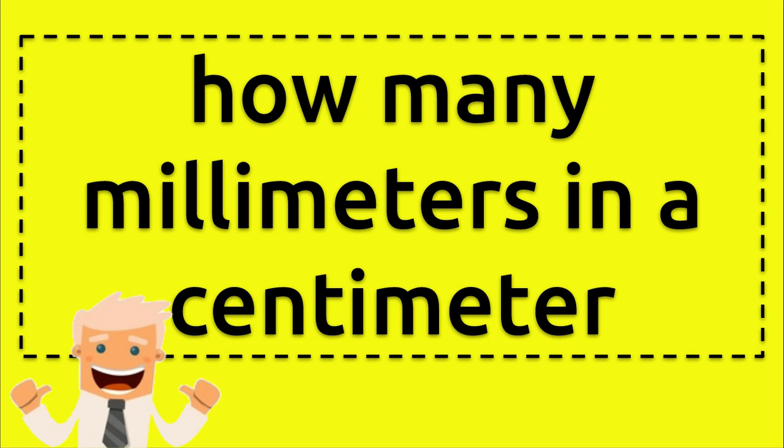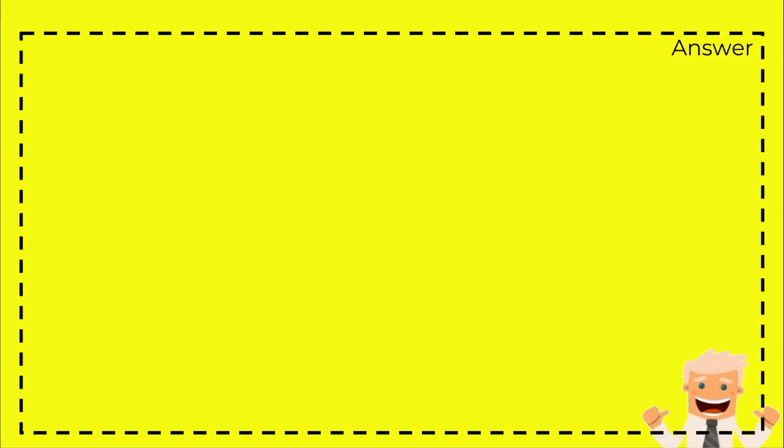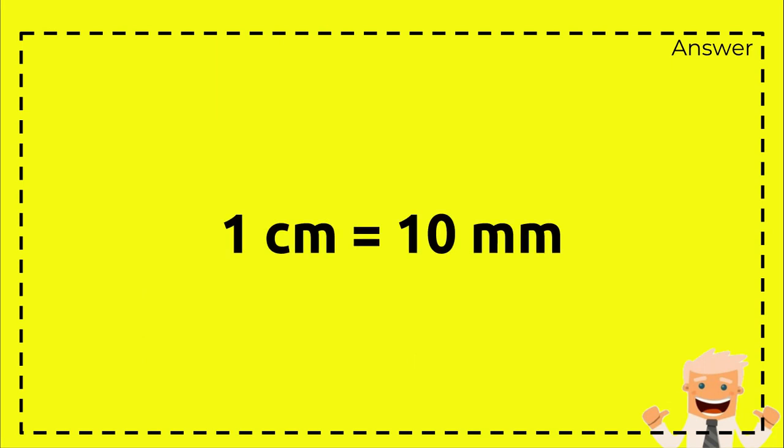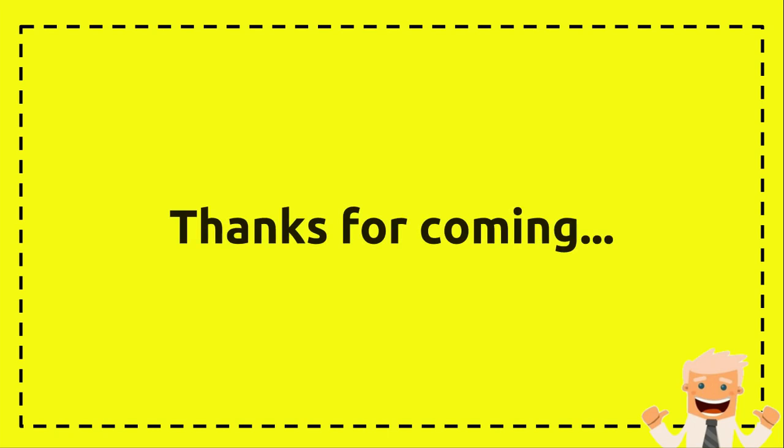Hi everyone, welcome back to my video. Tonight I'm going to answer a frequently asked question from the internet: how many millimeters in a centimeter? And the answer is: one centimeter equals ten millimeters. Very easy! Alright, that's all for me.